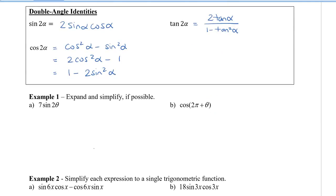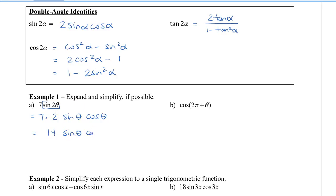Let's look at some examples. The first is to expand and simplify. Expanding means we write it in a larger form: 7 sin 2θ — using the double-angle identity, sin 2θ = 2 sin θ cos θ, so we get 7 times 2 sin θ cos θ. Multiplying 7 times 2 gives 14 sin θ cos θ.